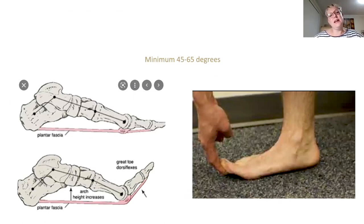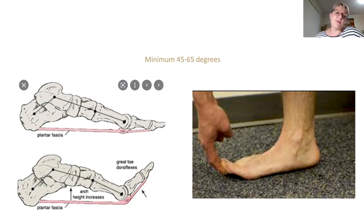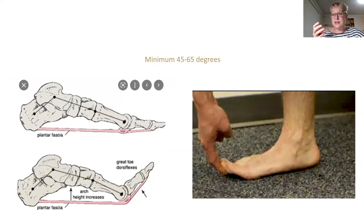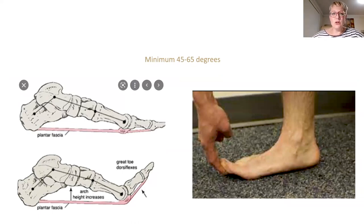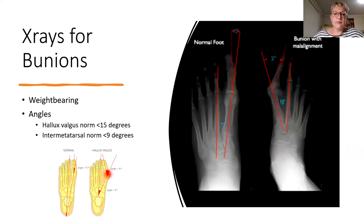This gives you an idea of how the medial column of the foot — the first ray, the navicular, and even the joints further back including the talus and heel bone — how much mobility they have also affects how the first ray functions and can contribute to bunions as well. X-rays are often used, particularly if someone is in the early stages, because we want to see progression.